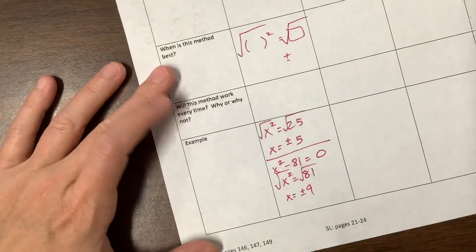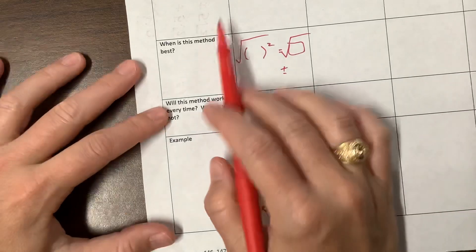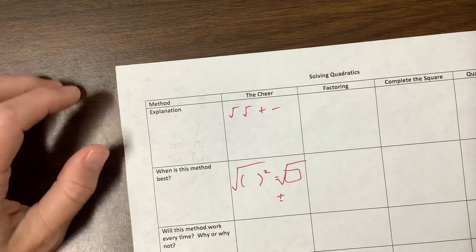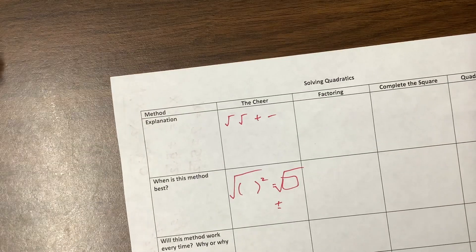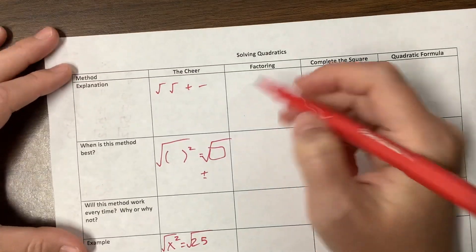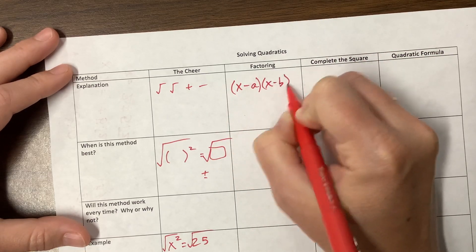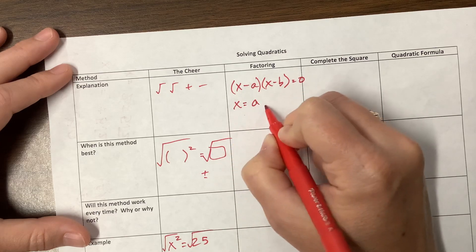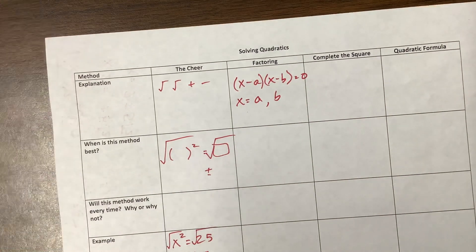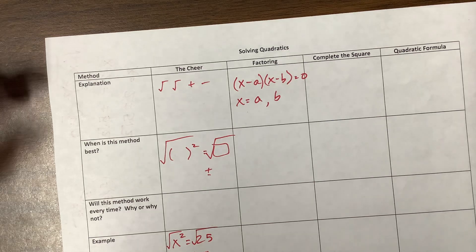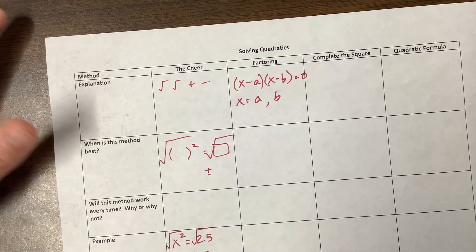Those are examples of when you use the cheer — square root, square root, plus, minus. Next: factoring. I like to factor when it's easy and straightforward. The idea is you get down to (x minus a)(x minus b) equals 0, and therefore x equals a or b. When do I factor? Well, when I can. Everything can be factored, but it doesn't always factor over the real or rational numbers — we'll talk about that more in HL and pre-cal.